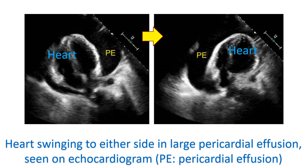Ventricles are the lower muscular chambers of the heart; the upper chambers are the right and left atrium. The right atrium and right ventricle are the chambers which collapse in diastole — relaxation — in cardiac tamponade.